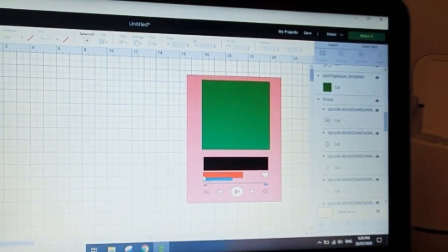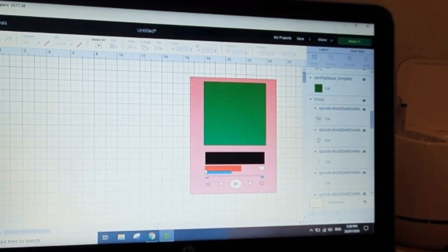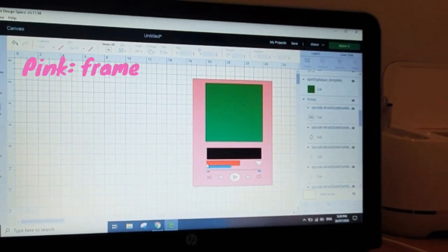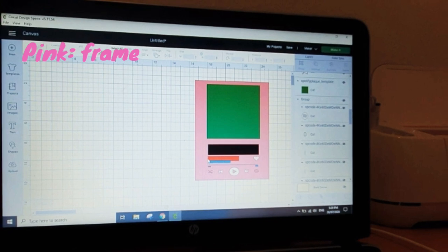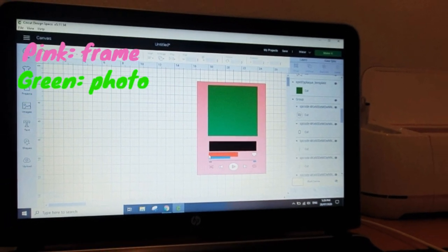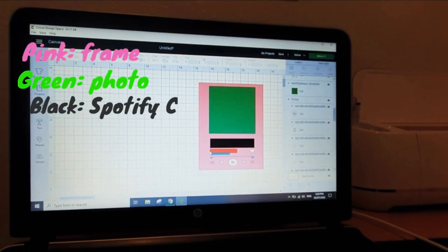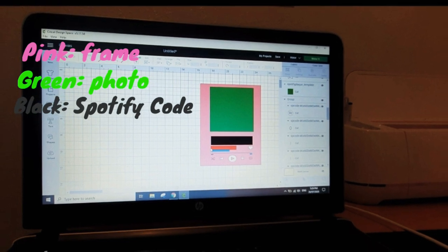As you might have noticed, this template is color-coded. Pink is the size of the frame which is A4 for this project. The green one is the size of the photo. Black is where the Spotify code will go. Red is for the title of the song. Blue is for the singer's name.